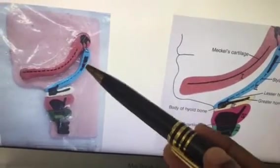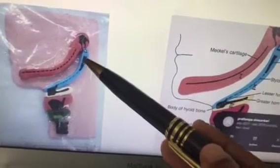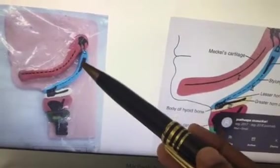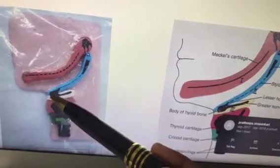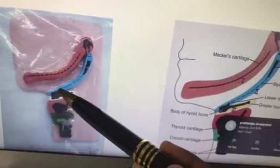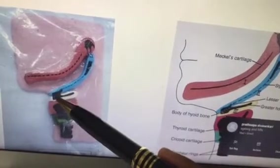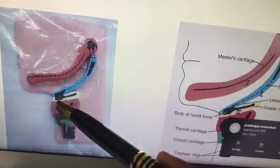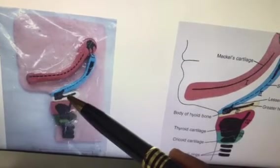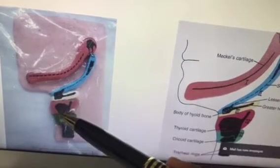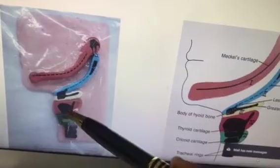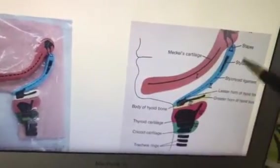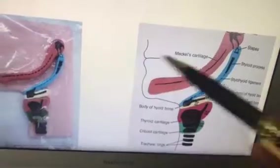The first arch gives rise to the muscles of mastication, malleus, and incus. The second arch gives the stapedius, styloid process, lesser cornu and upper body of the hyoid. The third arch gives the lower part of the body and greater cornu of the hyoid. The fourth to sixth arches give the thyroid cartilage, cricoid cartilage, and tracheal rings.